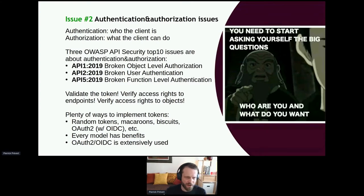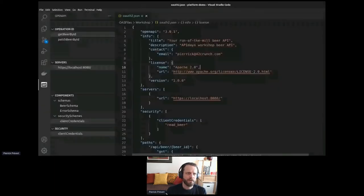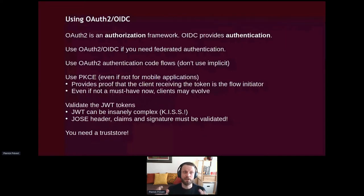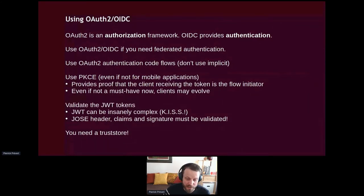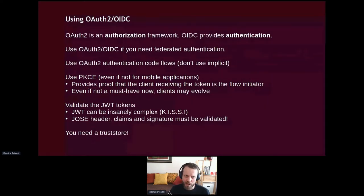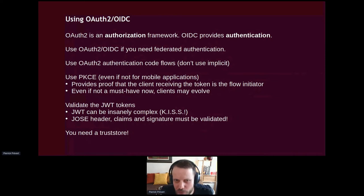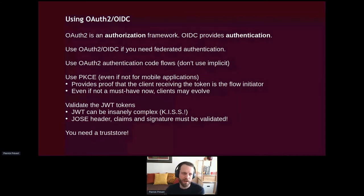OAuth2 is an authorization framework; OIDC provides authentication. People often think of OAuth2 as proof of authentication — it's not. If you need authentication, you use OIDC in conjunction with OAuth2. Use OAuth2 authentication code flows, not implicit — the industry standard is to no longer use implicit. It's not catastrophic, but it's not good enough for today's standards.